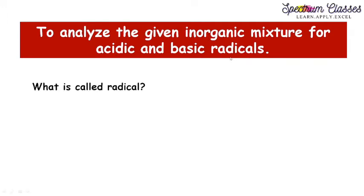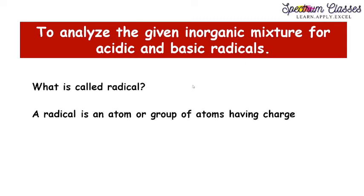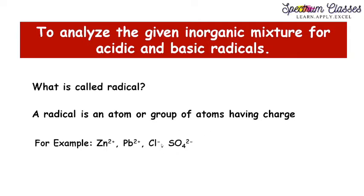First, what is called a radical? A radical is an atom or group of atoms which carry a charge. Atoms are like zinc, lead, and chloride; group of atoms is like sulfur and oxygen in combination, which form sulfates. So zinc ion, lead ion, chloride ion, and sulfate ions are all examples of radicals.